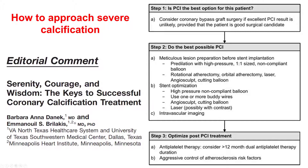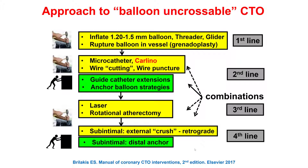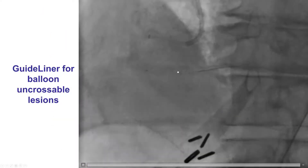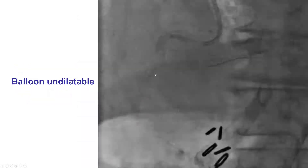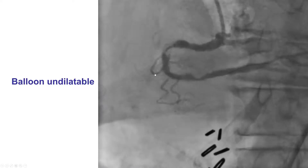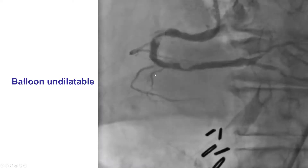Lesion preparation is key, followed by stent optimization and liberal use of intravascular imaging to ensure stents are optimized and the lesion is well prepared, and sometimes giving long-term dual antiplatelet therapy. In this particular case, the wire crossed but the balloon would not. For such balloon-uncrossable lesions, an algorithm is important: the initial step is a small balloon or grenadoplasty, then getting extra support with a guide catheter extension or anchor technique, and trying different microcatheters, wire-cutting or wire-puncture techniques. There is a third line using laser, and a fourth line using sub-intimal modification techniques. Here, the main issue appeared to be support, so by inserting an 8-French guide catheter we were able to cross into the distal RCA and predilate the lesion. However, the lesion also ended up being balloon undilatable, a very common combination with balloon-uncrossable lesions.